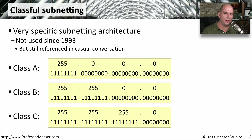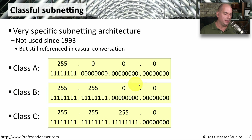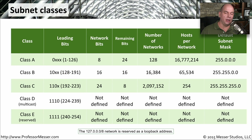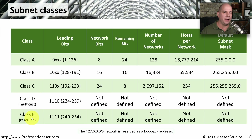If you are starting out in subnetting, a number of the questions you'll get will assume you're starting with the base subnet class. So it's important to know that a class A has 255.0.0.0, a class B is 255.255.0.0, and a class C is 255.255.255.0. There is also a class D and a class E — class D is multicast and class E is reserved. So when we talk about networks and subnetting, we're generally talking about a class A, class B, or class C address.